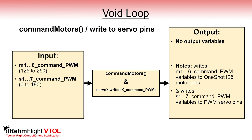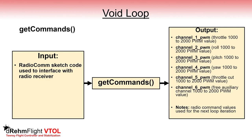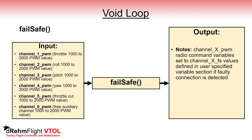Then we can finally write out the motor and servo command PWM variables to their respective actuator pins on the microcontroller. The command motors function is used to command the motor variables to the motor pins using OneShot125 protocol, whereas we simply use a servo.write call to write the servo variables to the servo pins. We then update the commands from the radio receiver which will be used in the next loop iteration — channel 1 to 6 PWM variables have a value between 1000 and 2000. Channel 5 is used to arm and disarm the motors, leaving channel 6 as a free auxiliary channel to switch between controller types or control mixing configurations. The failsafe function checks that the retrieved radio commands are valid; if not, all channel 1 to 6 PWM variables are set to failsafe values defined in the user specified variable section.